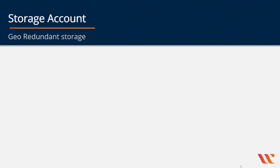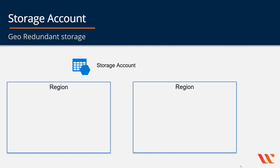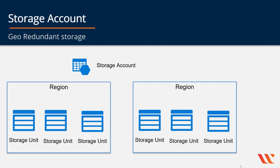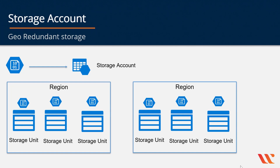Next we come to geo-redundant storage. Here we have our storage account, but now multiple regions come into the picture. Initially within a particular region, the replication technique used is local redundant replication, so you have your storage units within each region. When an object is written to a storage account, it gets copied onto both regions — it's first available in each storage unit using local redundant replication, and then after that it gets replicated onto another region. So even if one region were to go down, your other region would still be available, and this gives you the highest redundancy for your object.